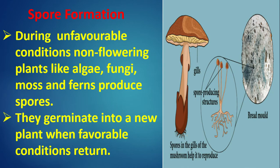Spore formation: During unfavourable conditions, non-flowering plants like algae, fungi, moss and ferns produce spores. They germinate into a new plant when favourable conditions return. In bread mould, the mycelium produces spore-producing structures. In mushrooms, pores in the gills help it to reproduce.